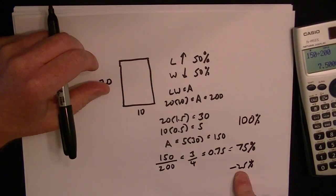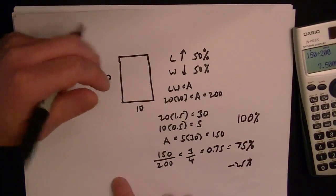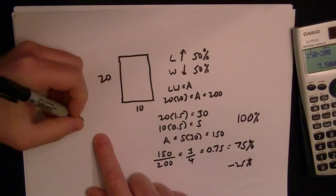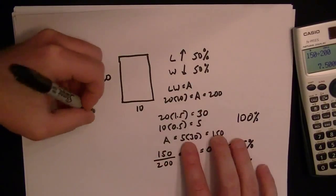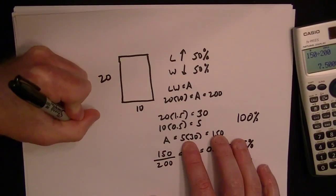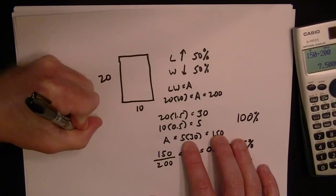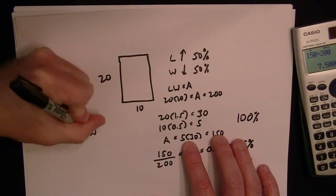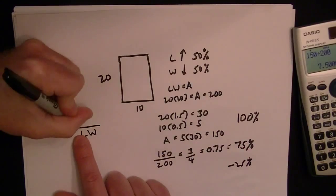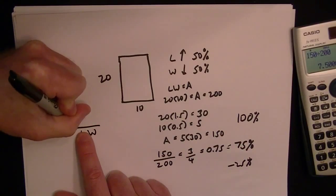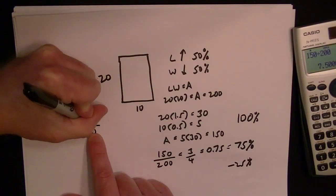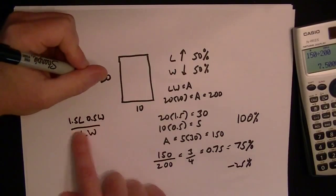We could also do it without numbers. The original area is length times width, and the new one is going to be 1.5 times the original length, and then times 0.5 times the original width. This is basically the same idea.